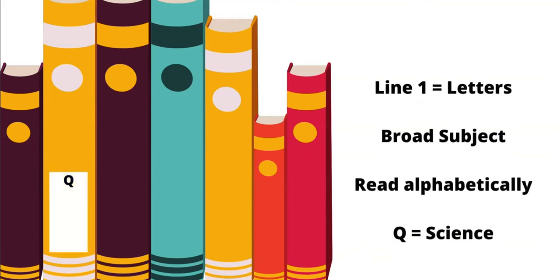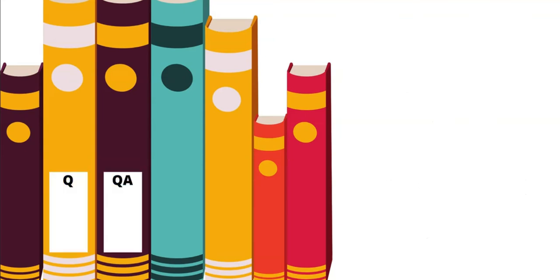Line 1 consists of letters and indicates the broad subject area of the information found in the item. The letters in the first line of the call number are read alphabetically. For example, Q would come before QA on the shelf, and QB would come before QC.